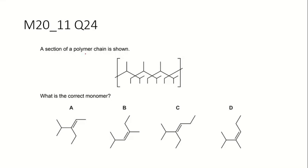This question gives us a section of a polymer chain and they want us to find the correct monomer of this polymer chain. So I want to label all the carbon in the backbone.